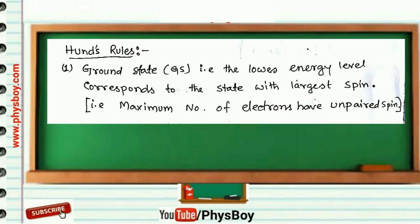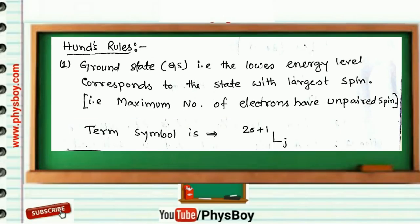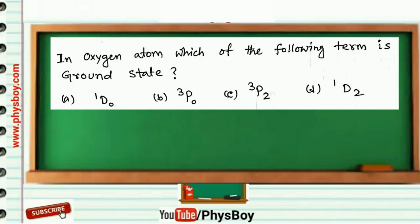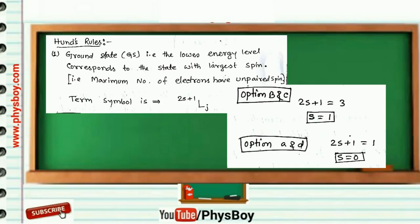You know that the term symbol is written as 2S+1, L subscript J. So if you look at option B and C, then 2S+1 equals 3, so spin quantum number S equals 1.